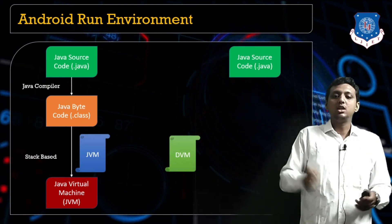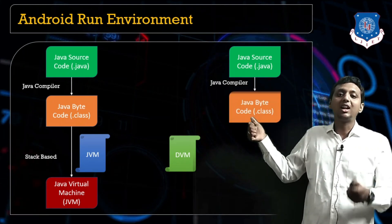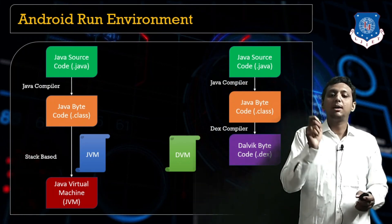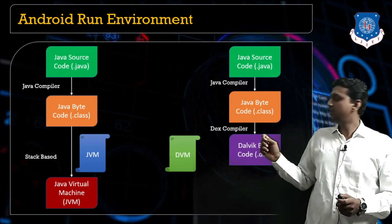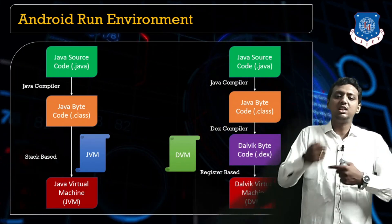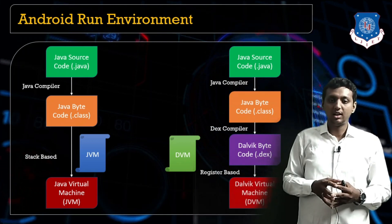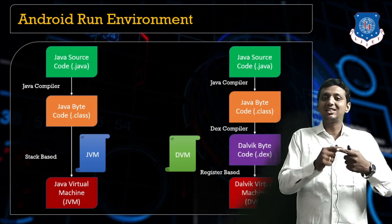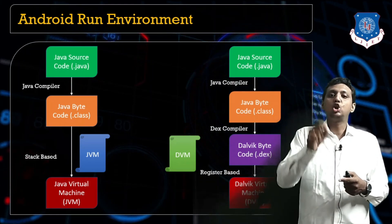When we talk about the Dalvik Virtual Machine, first we have the Java source file, which is converted into the class file. That class file is further converted into the .dex file — known as Dalvik byte code or Dalvik executable code. This .dex file is converted into machine-understandable code and passed to the OS. The DVM takes the .dex file as input, unlike the JVM which takes the class file.